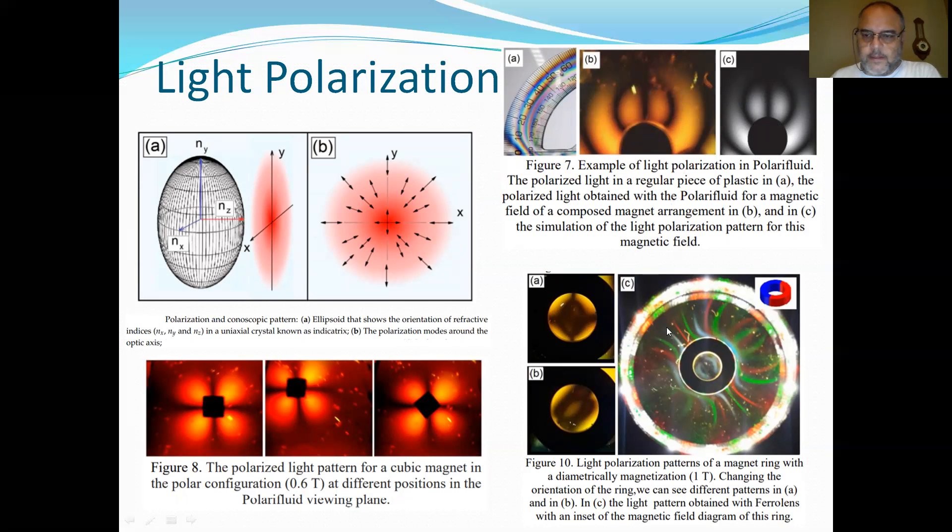And this is a light polarization pattern of a magnetic ring with diametrically magnetization. And when we change the orientation of this magnetic ring, we see different patterns.